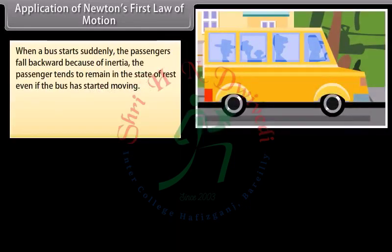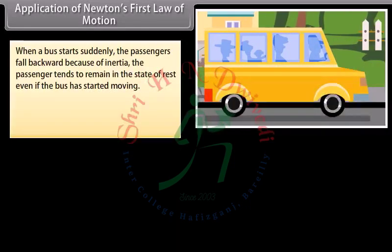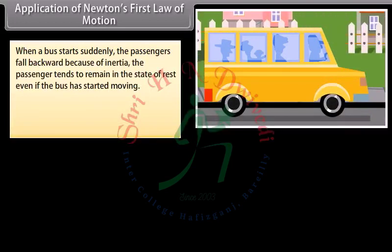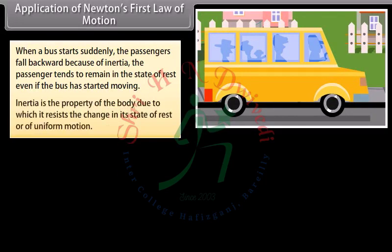When a bus starts suddenly, the passengers fall backward because of inertia. The passenger tends to remain in the state of rest even if the bus has started moving. Inertia is the property of the body due to which it resists the change in its state of rest or of uniform motion.